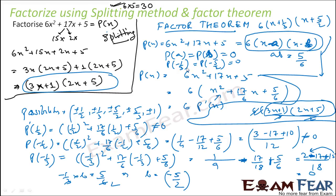And if you see, this answer is exactly the same as the splitting method answer — it matches perfectly. But using factor theorem it is a little lengthy, while splitting is easier. You should know both approaches. We had the polynomial, wrote it as 6·(x − a)·(x − b), used hit and trial to find one factor, then used a·b = 5/6 to find the other.